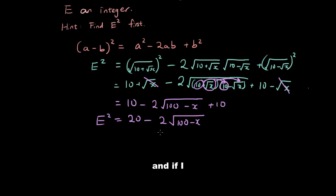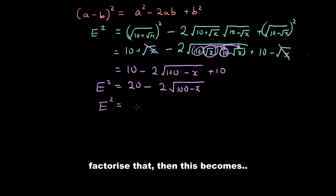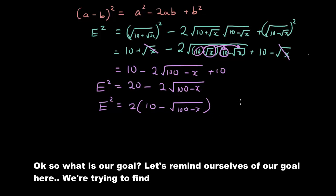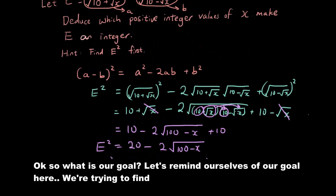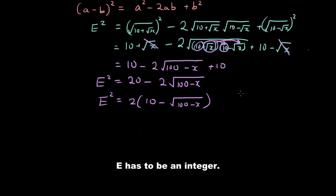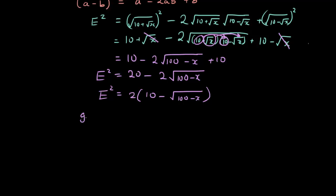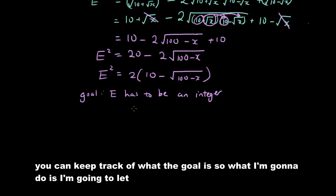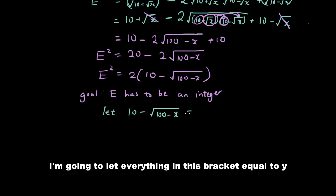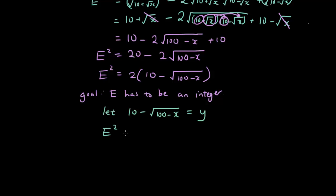So e² = 20 − 2√(100 − x), and if I factorize that it becomes 2(10 − √(100 − x)). Our goal is to find positive integer values of x that make e an integer. I'm going to let everything in the bracket equal y, so e² = 2y.